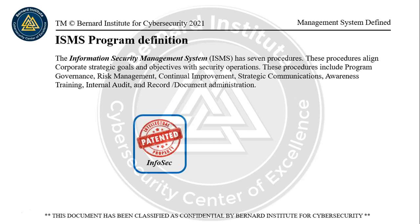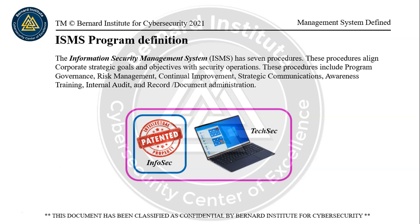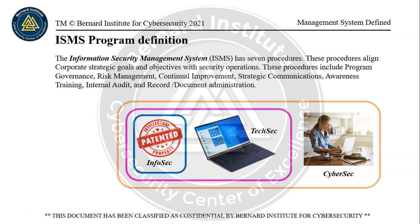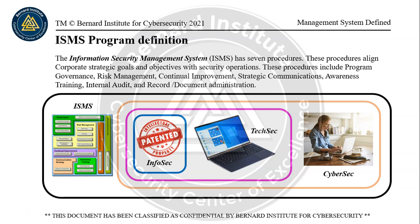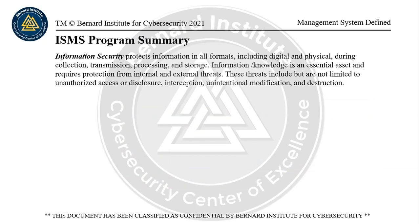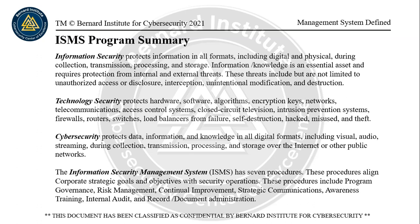We have InfoSec — information security — and then TechSec — technology security — where technology is used to access information. So we have two layers of security: security on the information itself, and security on the technology. Then hopefully we have security on the telecommunications, or CyberSec. The ISMS provides the wrapper around all three of these assets — a very important wrapper — to identify risks, treat risks, and ensure they're managed on a day-to-day basis. This framework is based on ISO 27001. In summary, information security, technology security, cybersecurity, and information security management systems are all distinct but work together as layers in how we protect information.